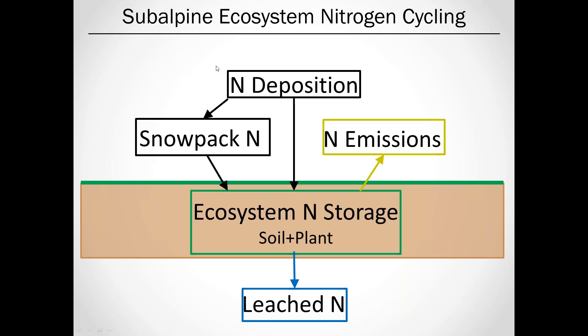To give a brief overview of the nutrient cycle in these systems: beginning with deposition falling out of the atmosphere — because these systems are covered with snow for such a long part of the year, most of that deposition falls into the snowpack and pools there. Once the snowpack melts every year, anywhere from July to August in these mountain systems, that snowpack nitrogen enters what I'm calling the ecosystem nitrogen storage pool — either taken up by plants, stored in vegetation, or retained in the soil. From the storage pool, you can have loss to the atmosphere as N2, as nitric oxide, or as nitrous oxide, which is a very potent greenhouse gas. You can also have loss due to leached nitrogen into watersheds, which can exacerbate acidification and eutrophication.